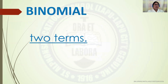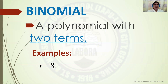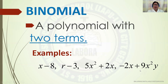The next classification is binomial. It is a polynomial with two terms. Examples: x minus 8, r minus 3, 5x squared plus 2x, and negative 2x plus 9x squared y. The first two expressions are separated by a minus sign, while the third and fourth examples are separated by a plus sign.